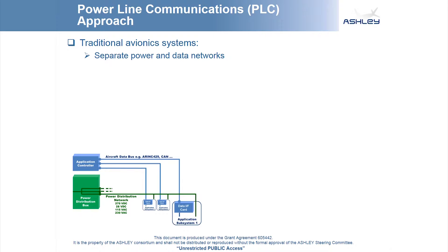Today's traditional avionic systems consist of separate power and data networks. This leads to a significant amount of cabling within the aircraft. The trend towards the more, or even all, electric aircraft means that the number of electrically controlled systems within the aircraft is increasing. Therefore, a means is required in order to reduce the overall amount of cabling in the aircraft.